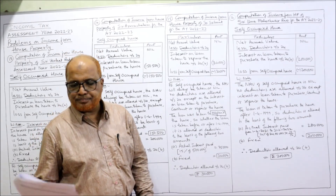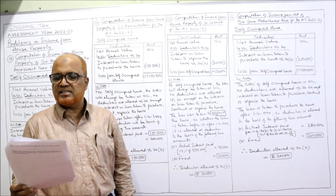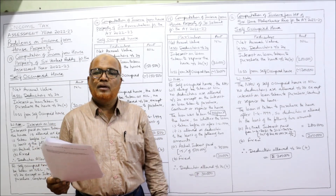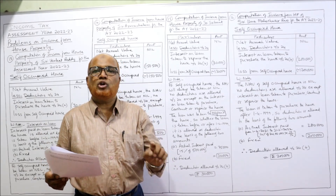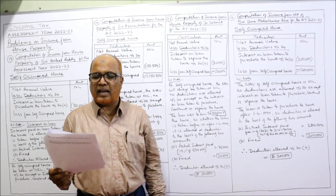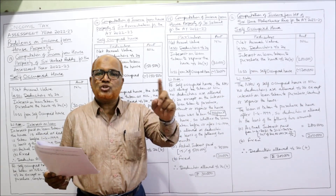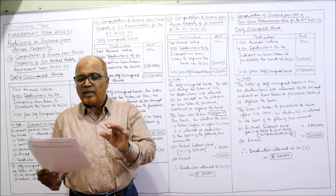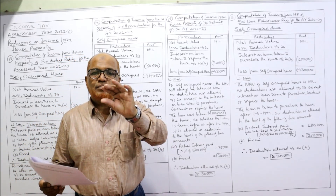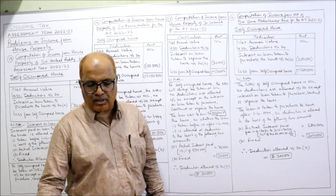Next, problem number 16. Sri Uma Maheshwar Rao on 1st June 2021 purchased a flat in Sri Satya Sai Residential Complex for his residence for ₹38 lakh — again self-occupied. He availed a housing loan from ICICI Bank for ₹24 lakh at 14% to purchase the flat. So interest paid on the loan will be allowed as deduction. The loan is taken after 1-4-1999 for purchasing the house, so the maximum ceiling limit is ₹2 lakh.